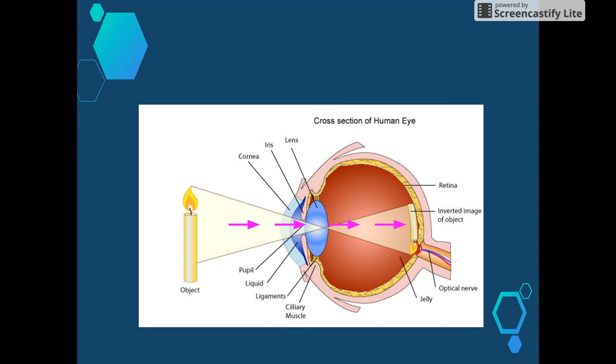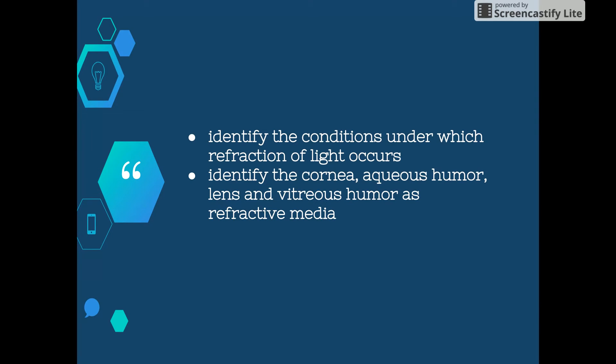To achieve this, the eye has transparent structures that must be maintained to perform their function of refracting light to the correct degree so that the image that ultimately reaches the retina is clear and in focus. We're going to start off by looking at these two dot points: identify the conditions under which refraction of light occurs, and identify the cornea, aqueous humour, lens, and vitreous humour as refractive media.